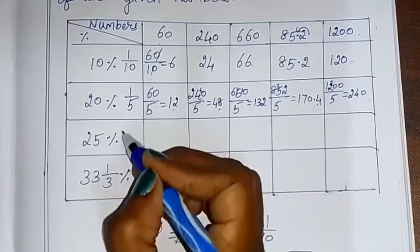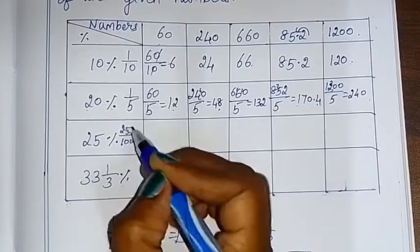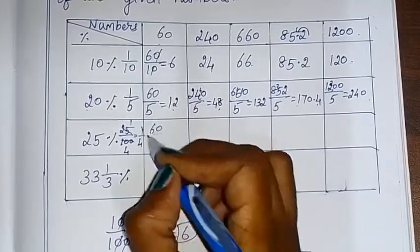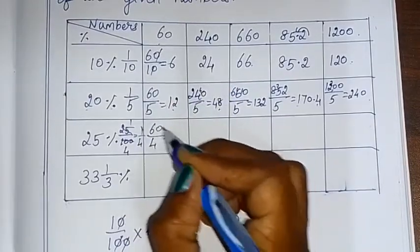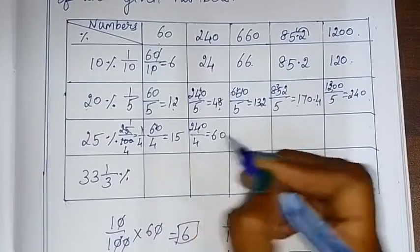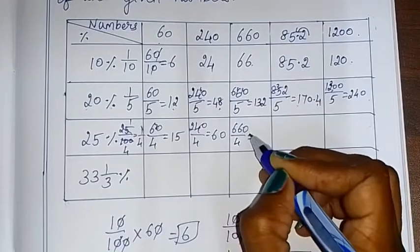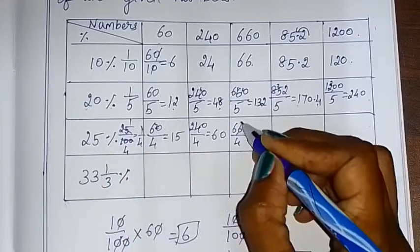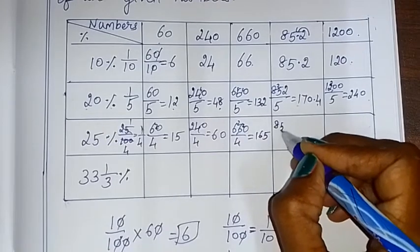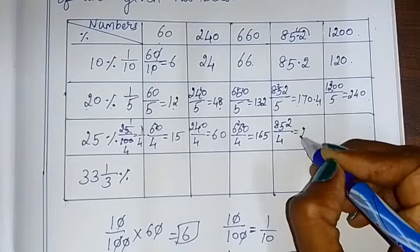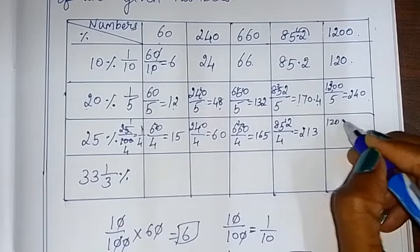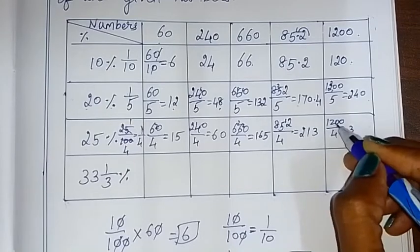25 percentage simplified fraction is 25 by 100. Using the table, 1 by 4. So 60 divided by 4. 240 divided by 4. For 25 percentage value, 4 divide, 4 ones are 4 remaining 2. 852 divided by 4. 4 twos are 8, 4 ones are 4, 4 threes are 12. 1200 divided by 4. 4 threes are 12.